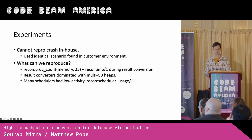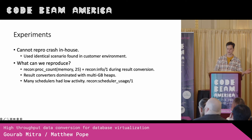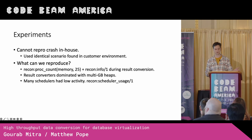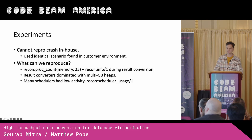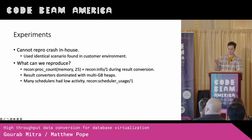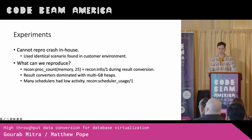We used recon proc_count to find the processes that had the highest amount of memory. From there, we quickly were able to reproduce the heap issue. We were able to see that there were at least two to three result conversion processes that had two-plus gigabyte heaps at a single time. Then we relied on recon's info function to drill down into these heavy processes and confirm they were the data conversion processes. In this reproduction journey, we also relied on a few other tools that recon provides, such as inspecting schedulers and message queue lengths.